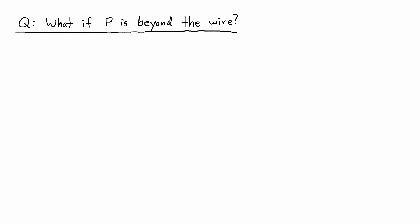So the question then is, what if point P is beyond the wire? Then the distance A is still the perpendicular distance between the wire or the axis of the wire, as shown by the black dotted line, and point P.